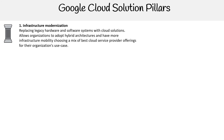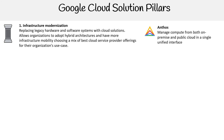The first is infrastructure modernization. Replacing legacy hardware and software systems with cloud solutions allows organizations to adopt hybrid architectures and have more infrastructure mobility, choosing a mix of best cloud service provider offerings for their organizational use case. If we're talking about hybrid architectures, one service we could utilize would be Anthos, which allows you to manage compute from both on-premise and public cloud in a single unified interface.